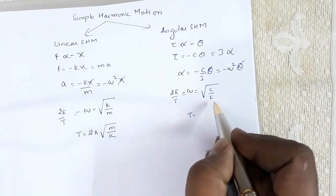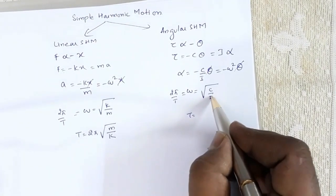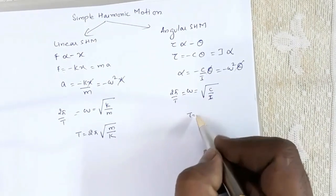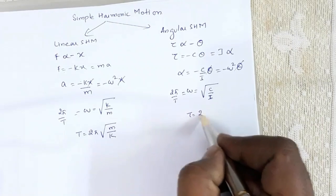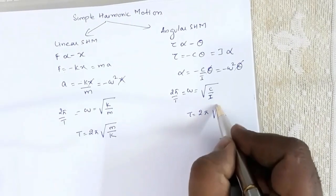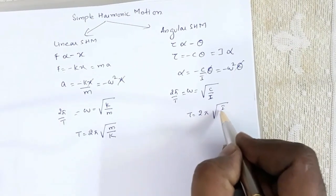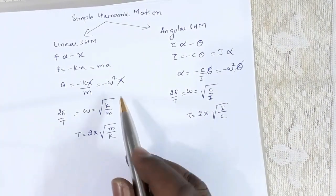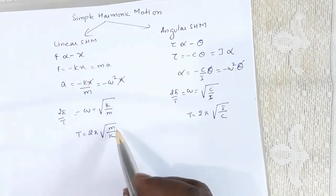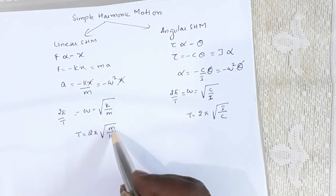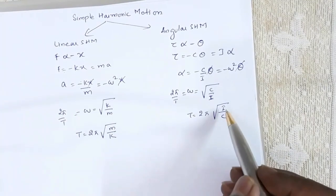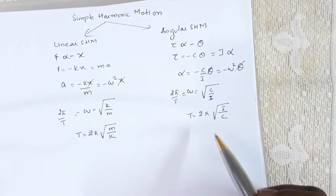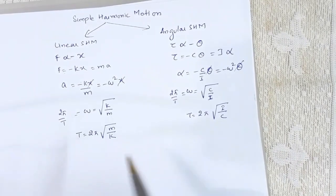Here I is the moment of inertia, so T = 2π√(I/c). In translation — linear SHM — we have mass; in rotation we have moment of inertia, so we have a similar relation.